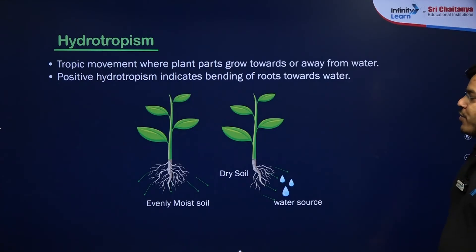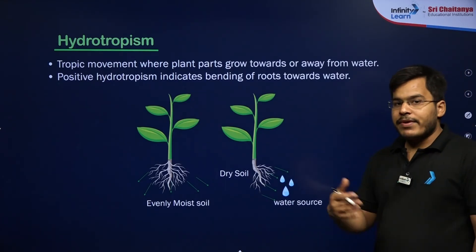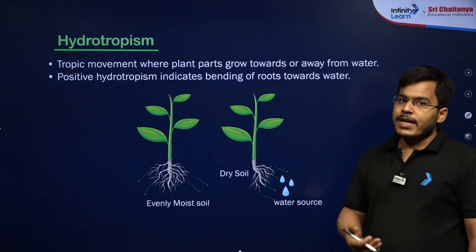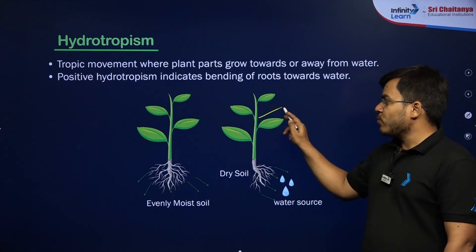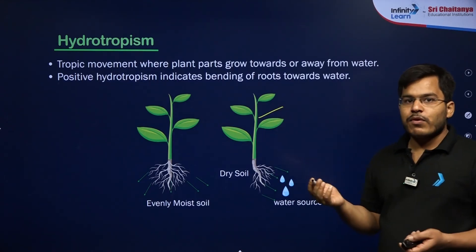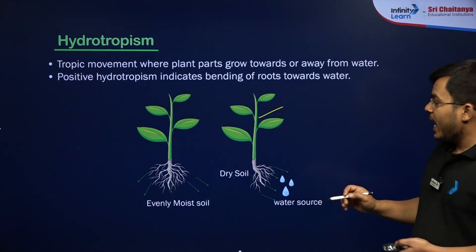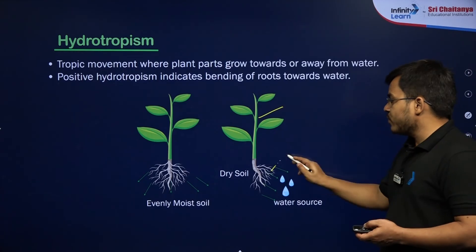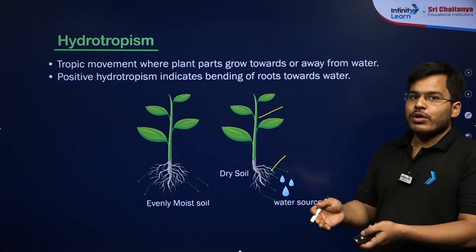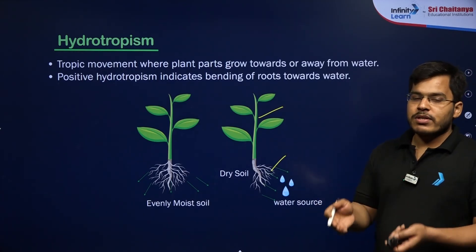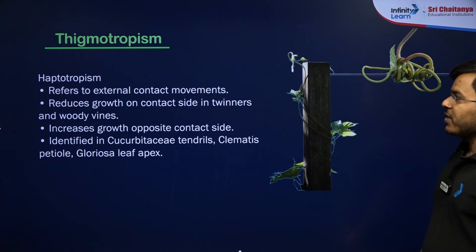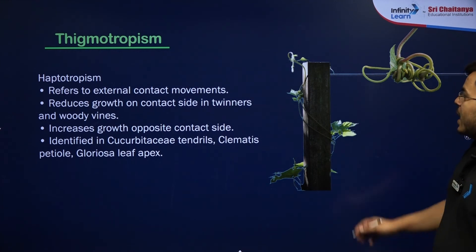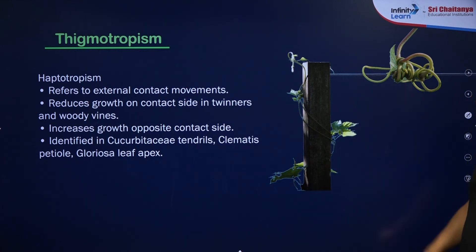Hydrotropism is the movement towards or away from water. The stem moves away from water, making it negatively hydrotropic, while roots move towards water, making them positively hydrotropic.